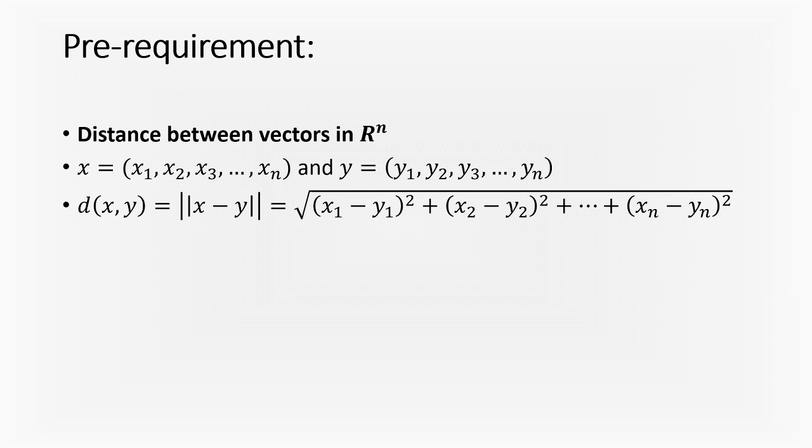Apart from it, the second pre-requirement that I will be needing is the dot product, a very basic fundamental which is also called scalar product. Given two vectors x and y, the dot product is x₁y₁ + x₂y₂ + ... + xₙyₙ. You need to multiply coordinate-wise and add them. If these two fundamentals are there with you, I can start talking about something called an isometry.